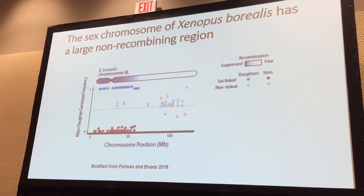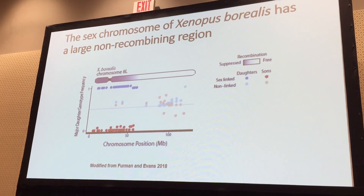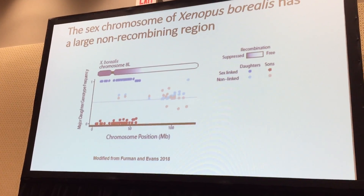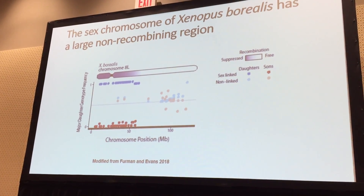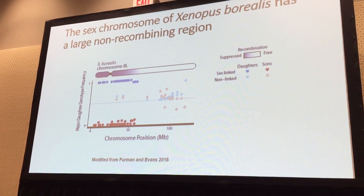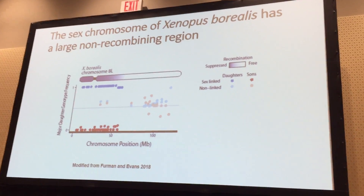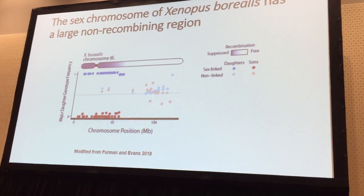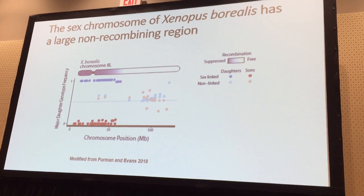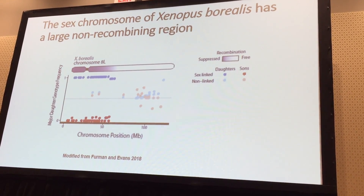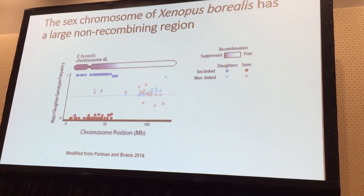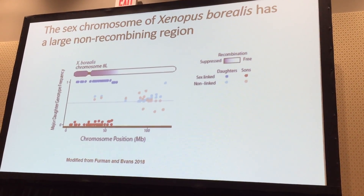With borealis's new sex chromosome and its large region of recombination suppression, we can test our expectation by checking whether the non-recombining regions accumulate a higher proportion of sex-biased genes compared to the recombining regions. I will refer to the non-recombining regions as the sex-linked regions and the recombining regions as the non-sex-linked regions.